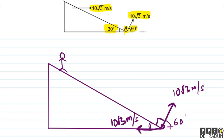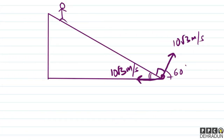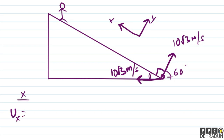Wedge के respect में बात करते हैं। Baccha हुआ angle automatically 90 degree हो गया। हम लोग velocity का x और y component निकालते हैं। यहाँ y-axis को wedge के perpendicular direction में ले रहे हैं, और x-axis को wedge के along (up the incline) ले रहे हैं। तो Ux = 10√3 का cos 30° component = 10√3 × (√3/2) = 15 meter per second।